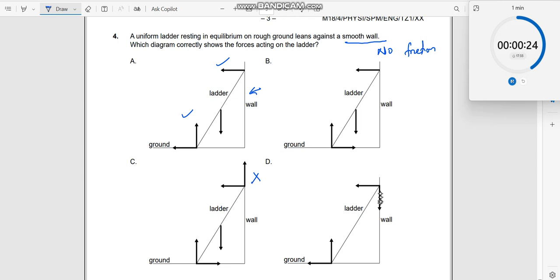See, there is a downward force. There cannot be a downward force here because there is no friction. So this is also incorrect. And moreover, weight should be there. Where is weight?